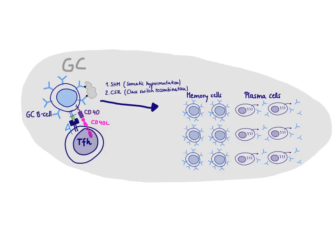The other process going on at the same time is class switch recombination. Here you recombine the constant domain of the heavy chain to move a new isotype region next to the variable domain, and this changes the isotype of the antibody. IgM is a huge molecule that doesn't get into many places, and it's only really good at complement activation — not neutralization or opsonization. The question is always: which pathogen invaded us, where is it, and what needs to be done? Once that's determined, we can use the antibody most efficient in removing the pathogen, which might be IgA, IgE, or IgG rather than IgM. That's why we need class switch recombination.